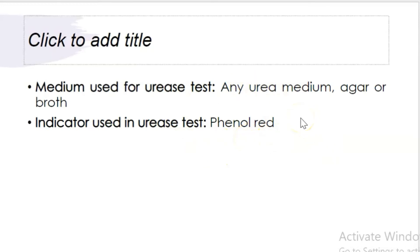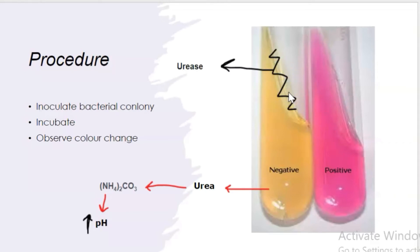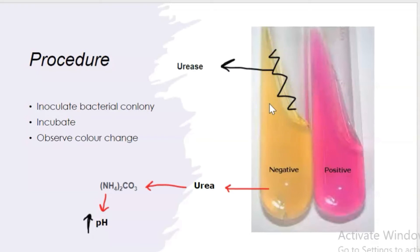The procedure of urease test: streak the surface of the urea agar slant with a portion of well-isolated colony and incubate it at 37 degrees Celsius for 24 hours. What happens during this incubation period? The bacteria that you inoculate grow on this agar. If the bacteria grown on this agar have urease enzyme...